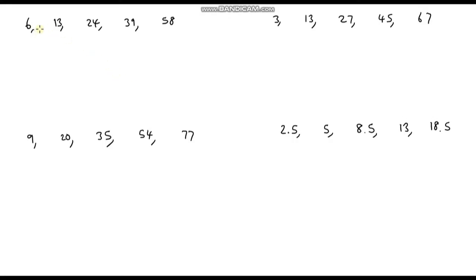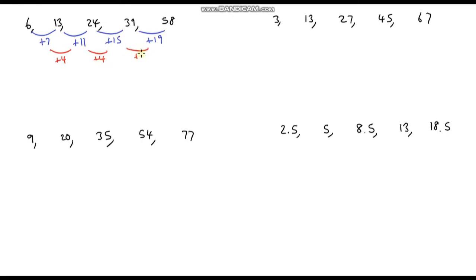The first thing we need to do is work out the first difference between each term. To go from 6 to 13 we're adding 7, from 13 to 24 we're adding 11, then adding 15 and then adding 19. Now for the second difference: we're adding 4, adding 4, and adding 4. So it's definitely a quadratic sequence. Because the second difference is 4, we halve that to get the coefficient on our n squared term. Half of 4 is 2, so we're going to start with 2n squared.